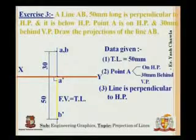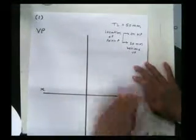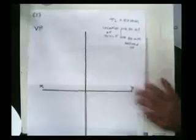The first location is the point A is on HP and the second location is 30 mm behind VP. So, I will write it 30 mm behind VP. So, this will show me the exact location of the point A on this plane.